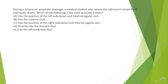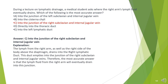A. Into the junction of the left subclavian and internal jugular vein. B. Into the cisterna chyli. C. Into the junction of the right subclavian and internal jugular vein. D. Directly into the thoracic duct. E. Into the left lymphatic duct.